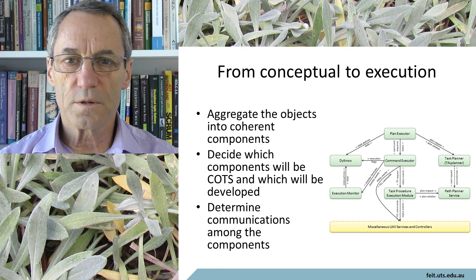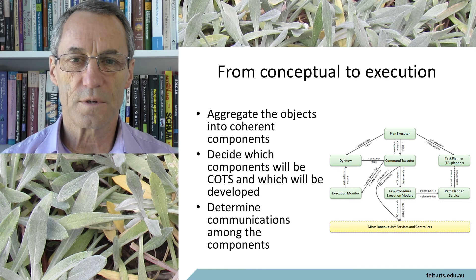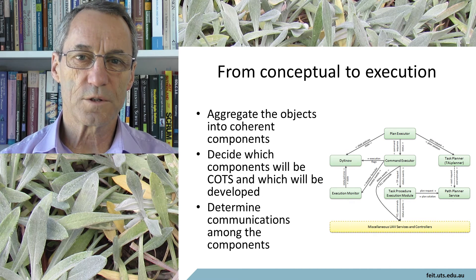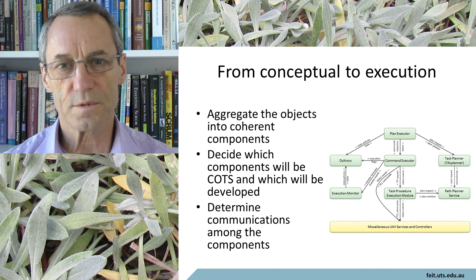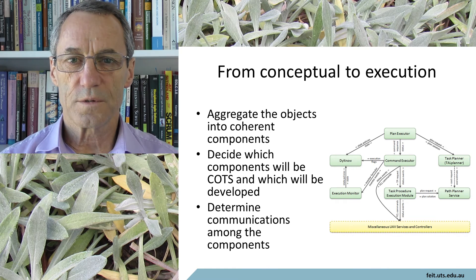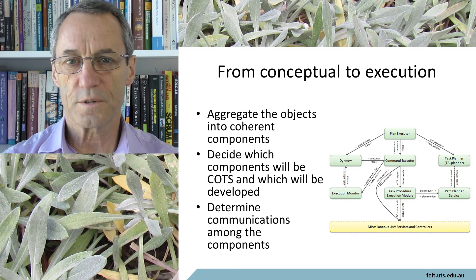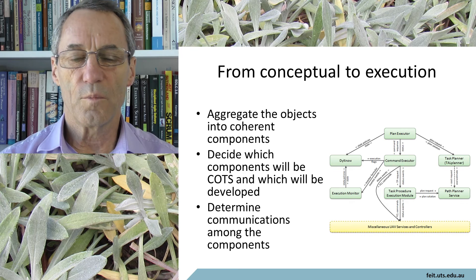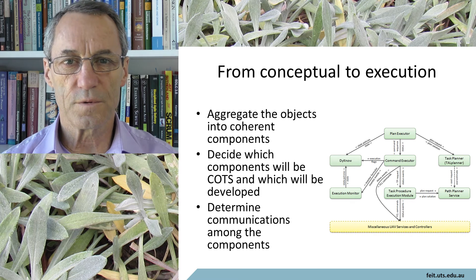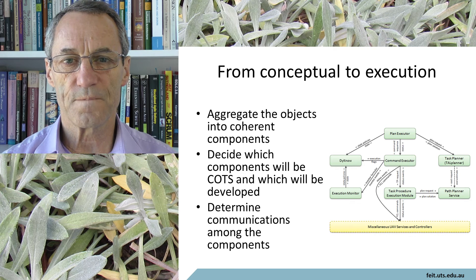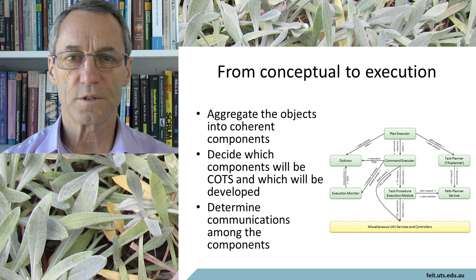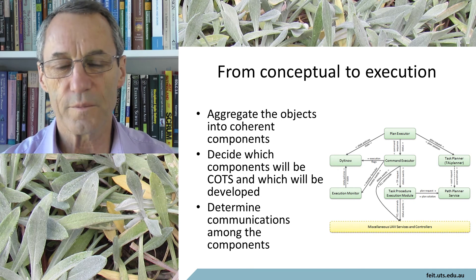To get from the conceptual architecture to the execution architecture, most of the time it is a matter of aggregating objects into some sort of coherent components and subsystems, deciding which components should be COTS components — that is, things you buy — and which components you need to develop, and determining the communications among them. Simply buying components, for example a commercial framework or library such as .Net or JTVE, or buying a database, puts some implementation constraints and concerns on the architecture you're designing. These become constraints of the fact that it's a computer system — a practical consideration for implementation, as opposed to the conceptual theoretical one where you didn't have to worry about these things.